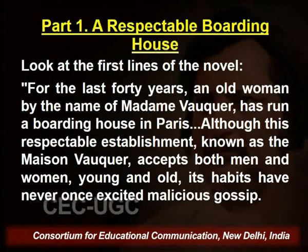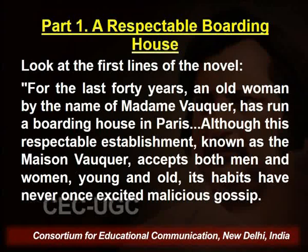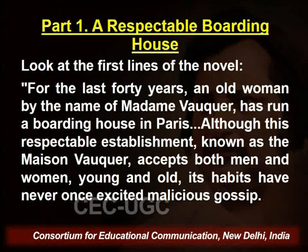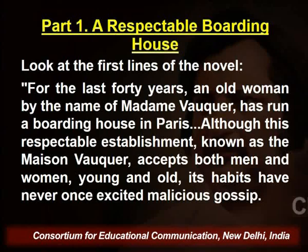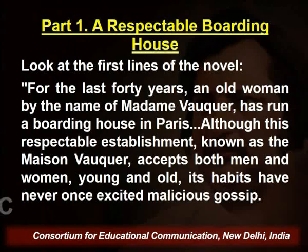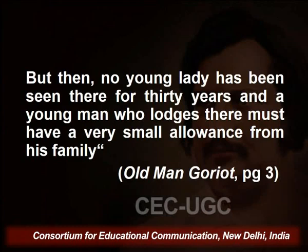Let us begin with part number one, A Respectable Boarding House. These are the first few lines of the novel, and I quote: 'For the last 40 years an old woman by the name of Madame Vauquer has run a boarding house in Paris. Although this respectable establishment known as Maison Vauquer accepts both men and women young and old, its habits have never once excited malicious gossip. But then, no young lady has been seen there for 30 years, and a young man who lodges there must have a very small allowance from his family.' Page number three, unquote.